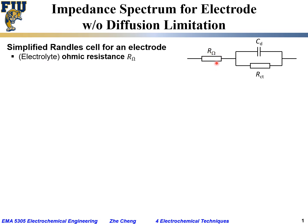R_ohm typically represents the ohmic resistance coming from the electrolyte. It may also include ohmic resistance from the electrode, but quite often that part is very small and can be neglected. R_ohm behaves like an ideal resistor. Then we have C_dl, the double layer capacitance, which represents the charge separation at the electrode-electrolyte interface.